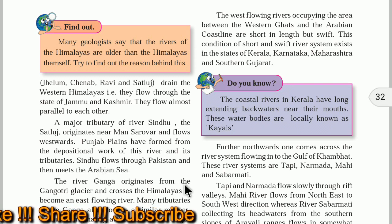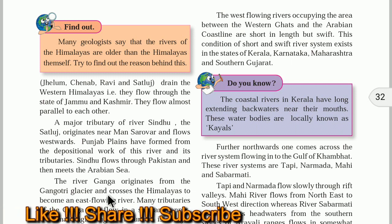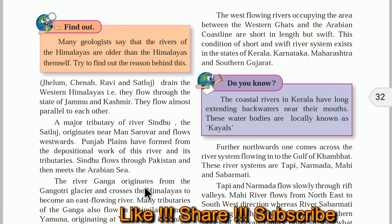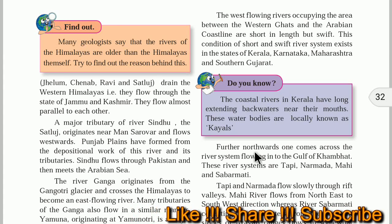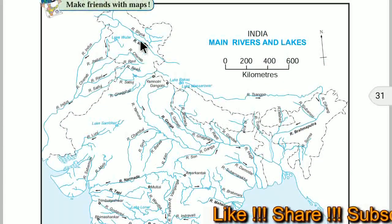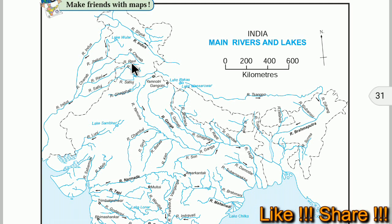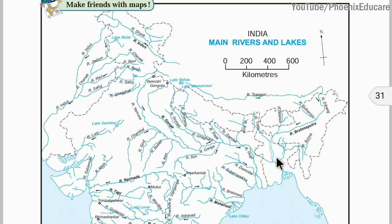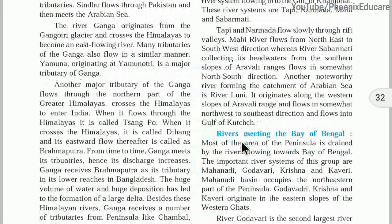The river Ganga originates from the Gangotri glacier and crosses the Himalayas to become an east-flowing river. It flows eastward and meets the Brahmaputra river in Bangladesh. Both rivers then flow together and meet the Bay of Bengal in Bangladesh.